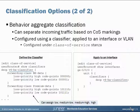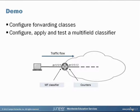You can define more forwarding classes and more levels of loss priority in this classifier — it's very customizable. On the right side you can see applying this classifier: still under the class of service section, for the appropriate interface we apply the classifier of type DSCP and specify the classifier name. Now we'll move to the demo portion — we're going to configure some forwarding classes and try out a multi-field classifier. Traffic will be generated from a server, sent across a router, with the MF classifier on ge-0/0/6 and counters monitored on ge-0/0/12.